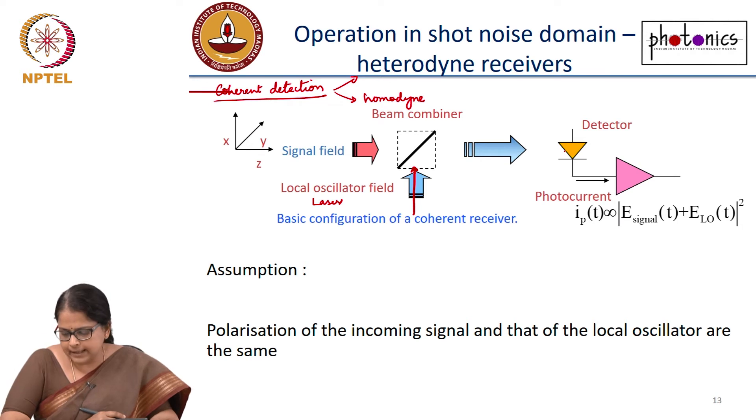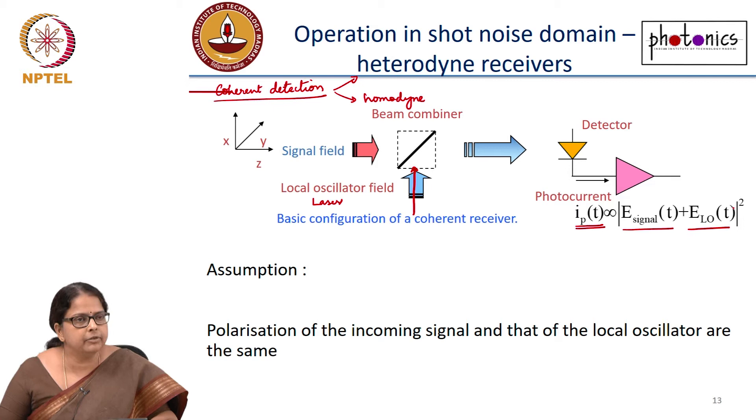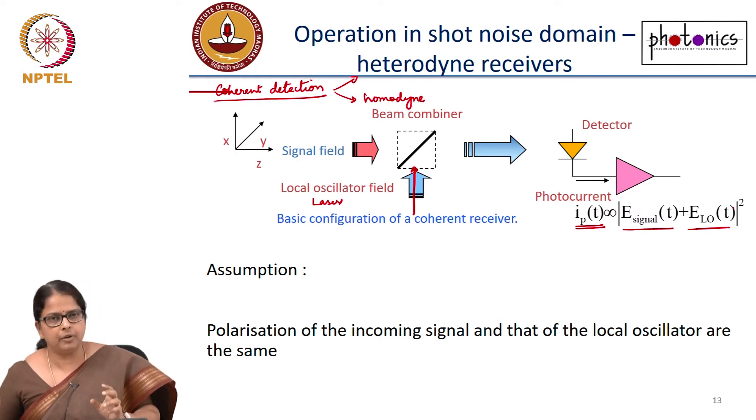The only assumption you are making is that the polarization of the incoming signal and that of the local oscillator are equal. What is this photocurrent going to respond to? It is going to respond to E signal plus E LO, the field mod square. Where is this mod square coming from? The detector responds to intensity. The total field falling on the detector is E signal field plus the local oscillator field. Local oscillator is just a laser, another laser.